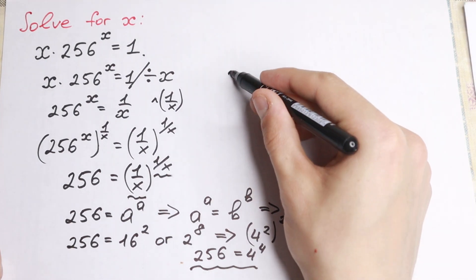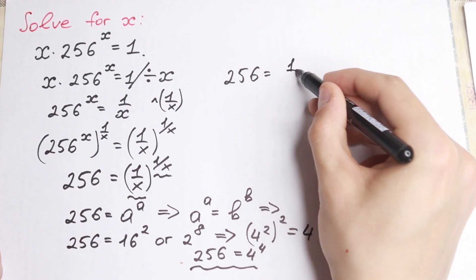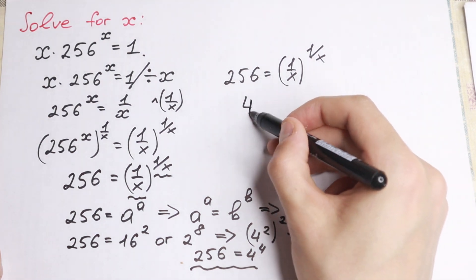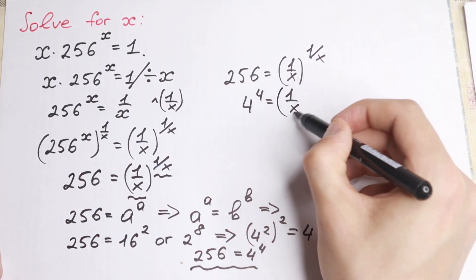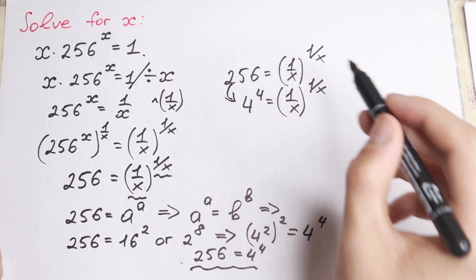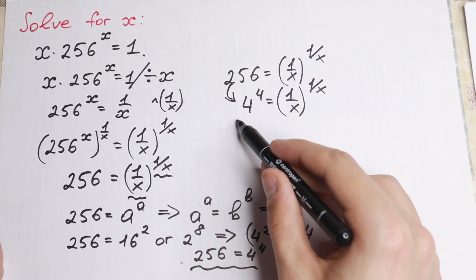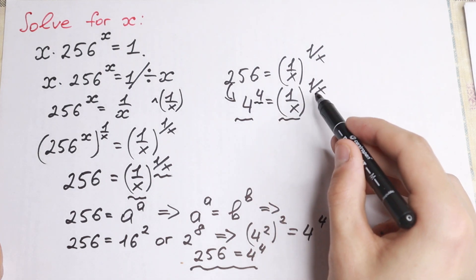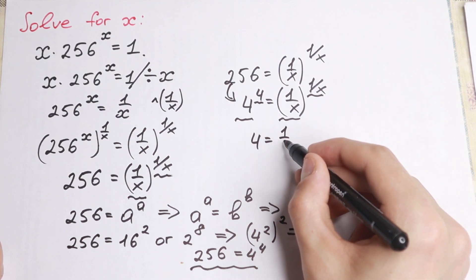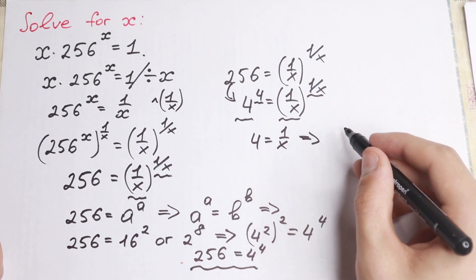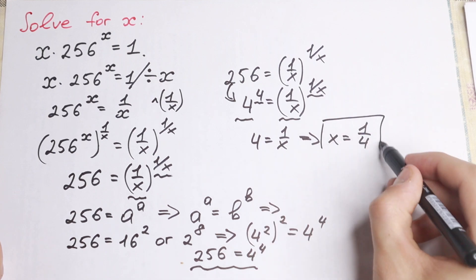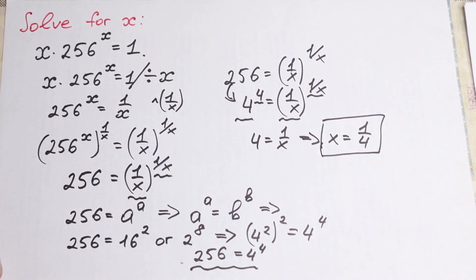From the expression 256 equals 1 over x to the power 1 over x, we substitute: 4 to the power 4 equals 1 over x to the power 1 over x. Right here we have same base and same exponent on both sides. So the only way this equation works is when 4 equals 1 over x. From here, x equals 1 fourth using cross-multiplying. So x equals 1/4, and this is our solution.